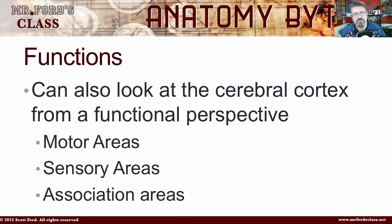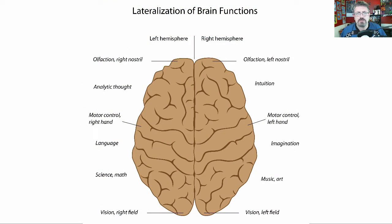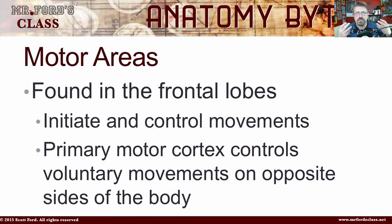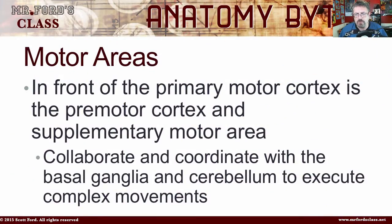In addition to looking at the brain by location and lobes, we can also look at it by function. The cerebral cortex has motor areas, sensory areas, and association areas. The motor area is found in the frontal lobe — it initiates and controls movement. For example, reaching down to get a coffee mug and taking a sip — that entire action was initiated by the frontal lobe, controlling the skeletal muscles. In front of the primary motor cortex are also the premotor cortex and supplementary motor areas, which we'll save for another video.